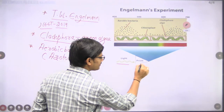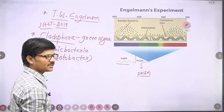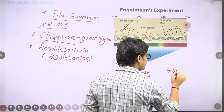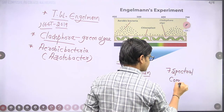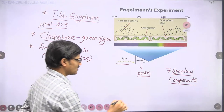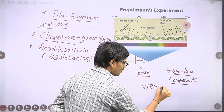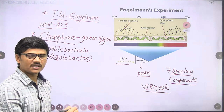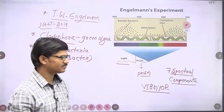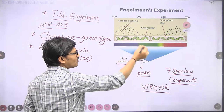Engelmann made sunlight pass through a prism, which split the sunlight into seven spectral components: violet, indigo, blue, green, yellow, orange, and red. Each spectral component was then made to illuminate on the Cladophora. The aerobic bacteria were used as detectors to find out where more oxygen was being released.